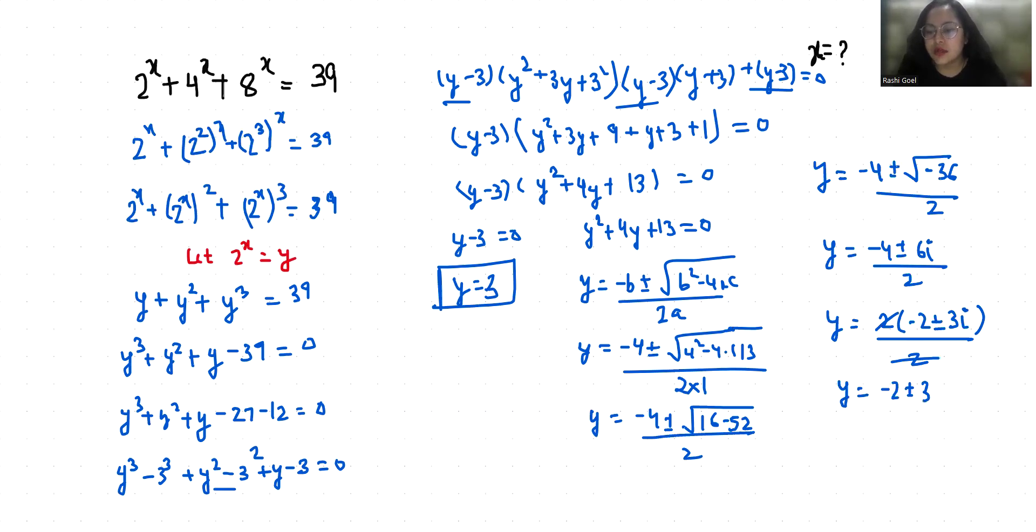So we will reject this case because there are complex roots, and we have y as 2^x = y.